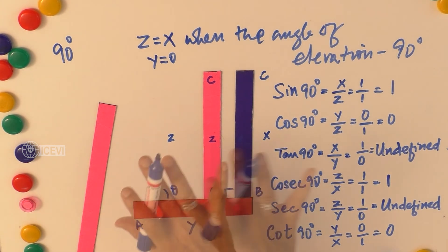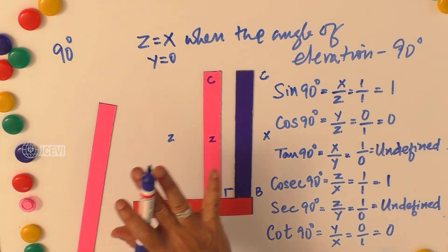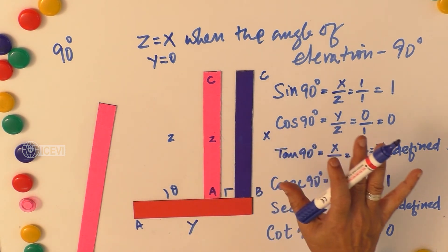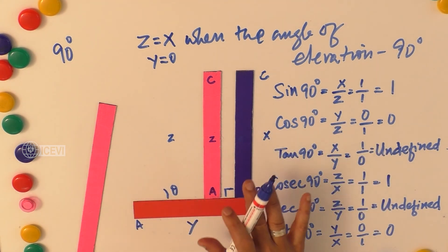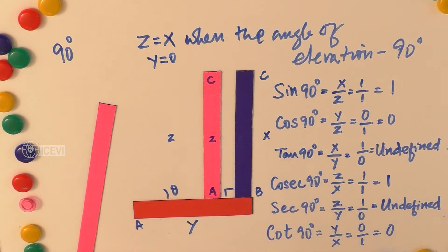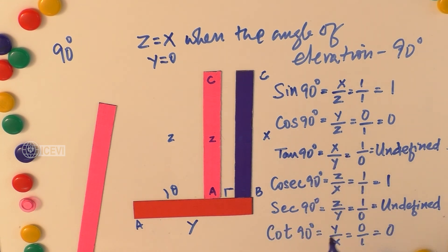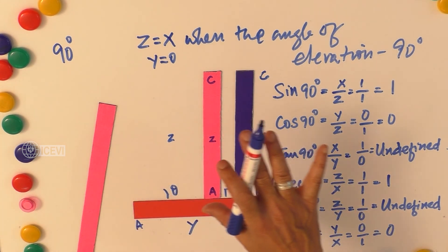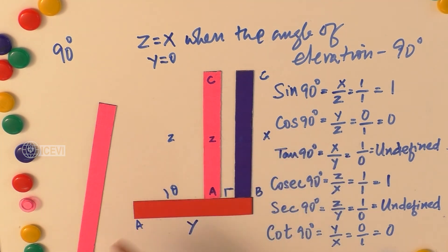We have already proved the trigonometric ratios of other angles such as 0°, 30°, 45°, and 60°. We have given practical examples to find the trigonometric ratios of all these angles. Instead of simply memorizing, the experiences provided through these practical examples will help the child understand and then remember the ratios.